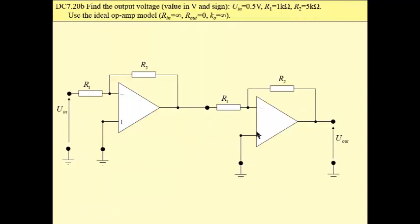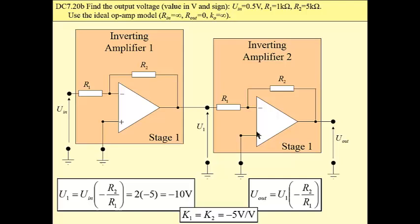And finally, another configuration of op-amp circuits. This time, we have two inverting amplifiers connected in cascade.